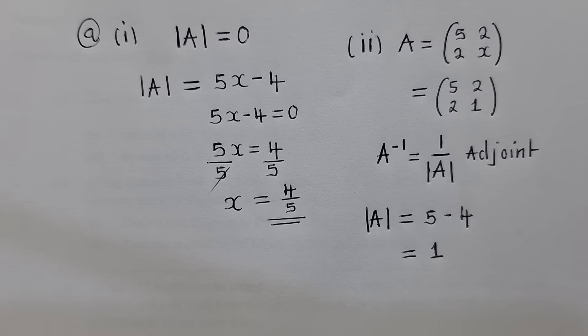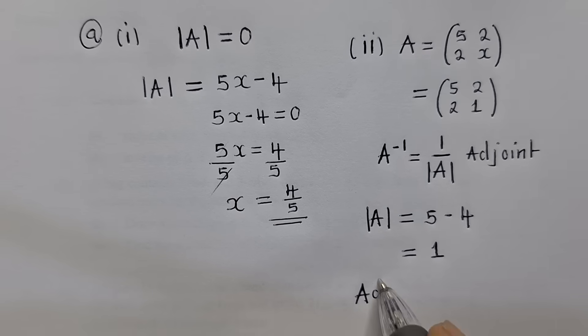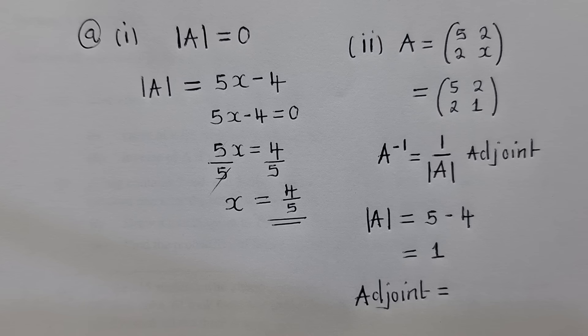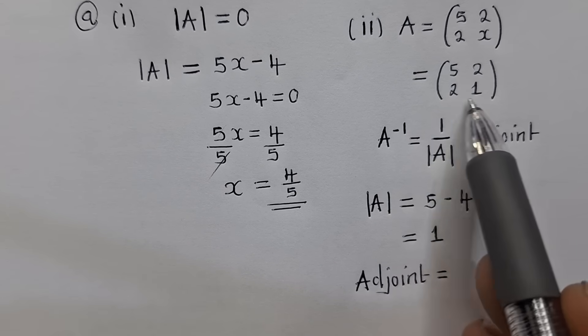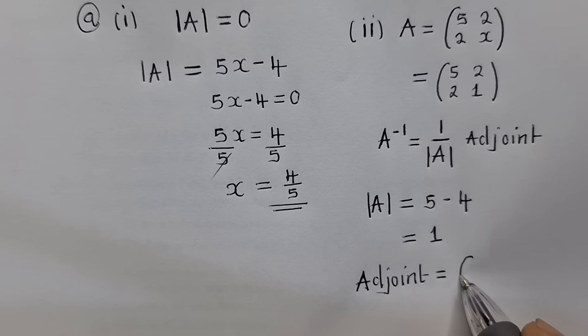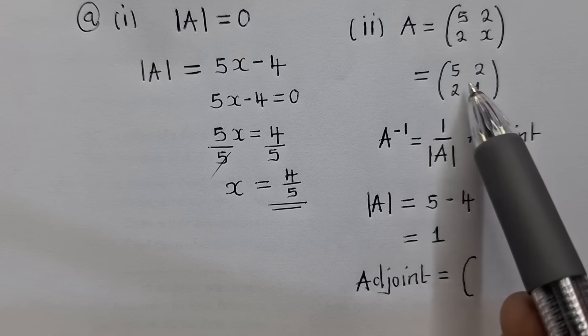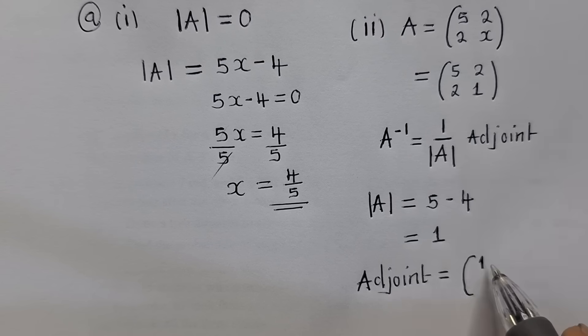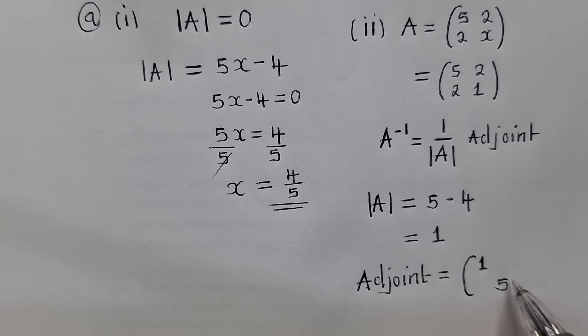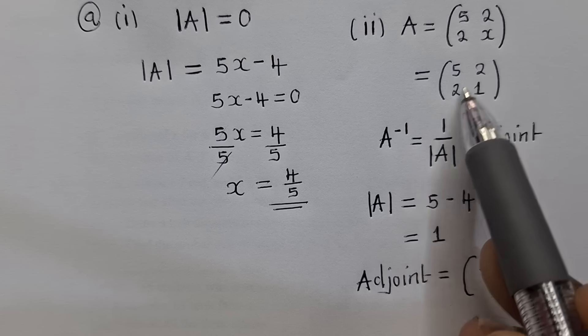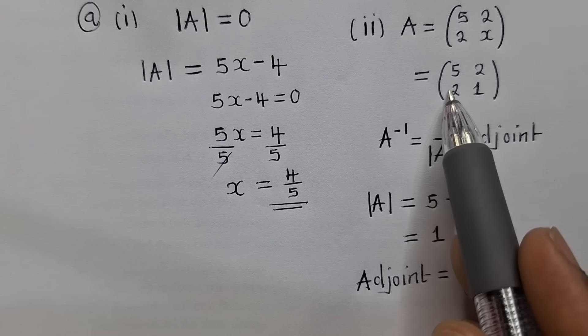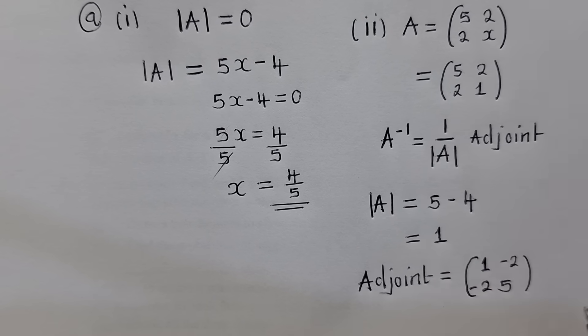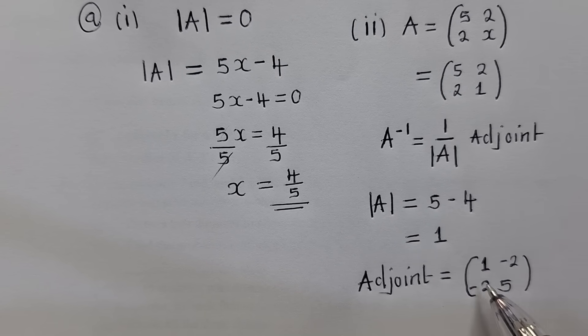The other thing that we need to find here is the adjoint. For the adjoint to be found, we go to this matrix. We switch the major diagonal, so always switch the position of this and this. So 1 will go where 5 was, and 5 also where 1 was. For the minor diagonal, you change the sign. If this is positive, you write negative. Even here, negative, because it was positive.